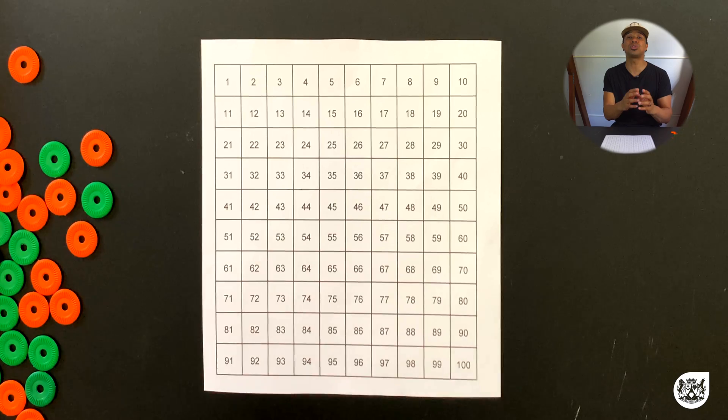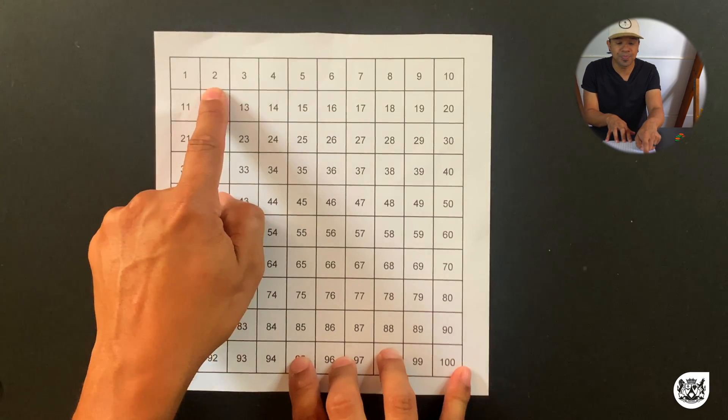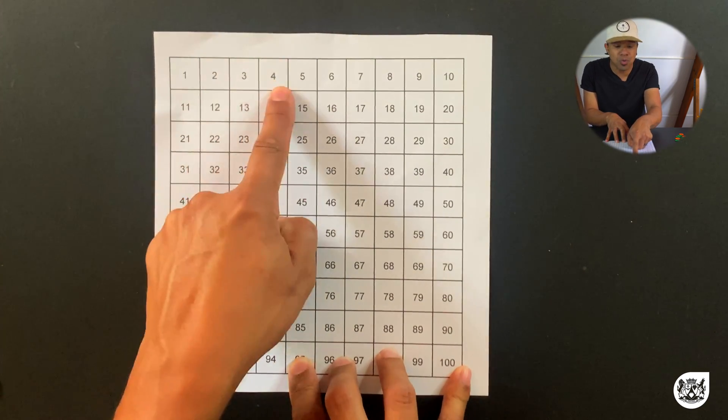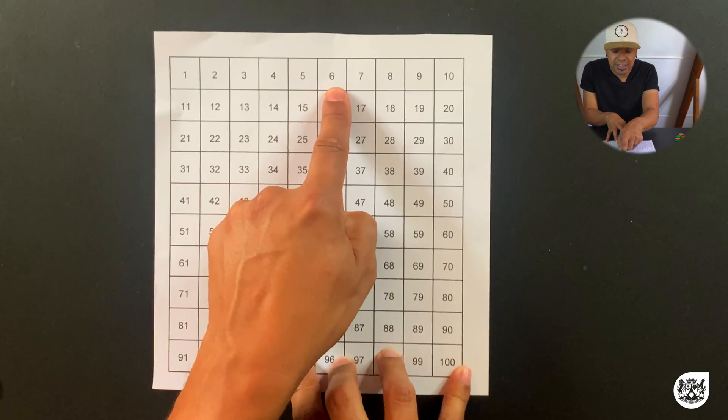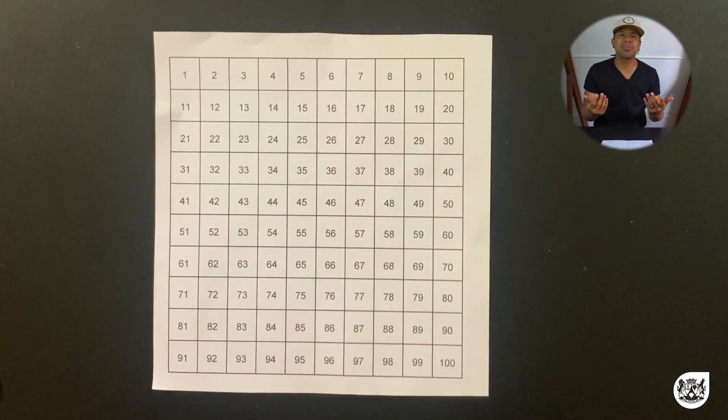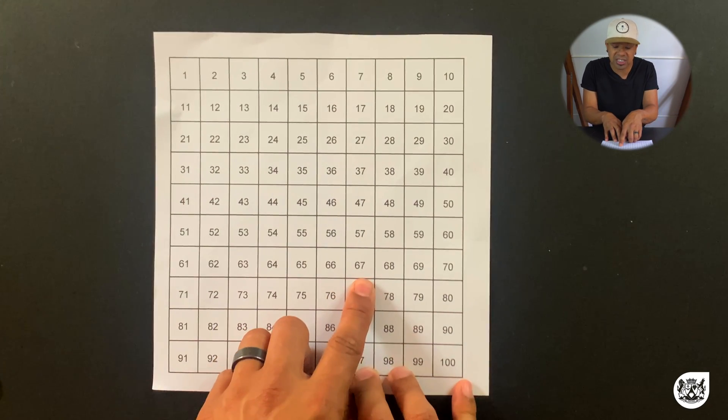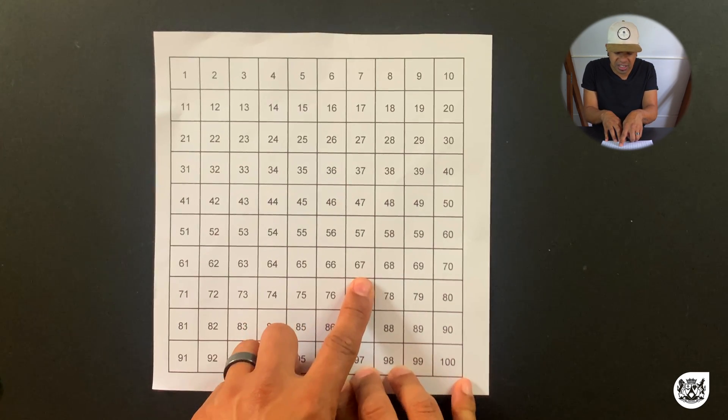And another thing that you will note when we count forward and backwards in two is that we're always jumping over one number. Let's look: if we move from 2 to 4 we jump over 3, if I move from 4 till 6 we jump over 5. And if we move backwards the same thing applies. If I'm moving from 67 and I'm counting backwards in two, I will go from 67 to 65, I'm jumping over 66.